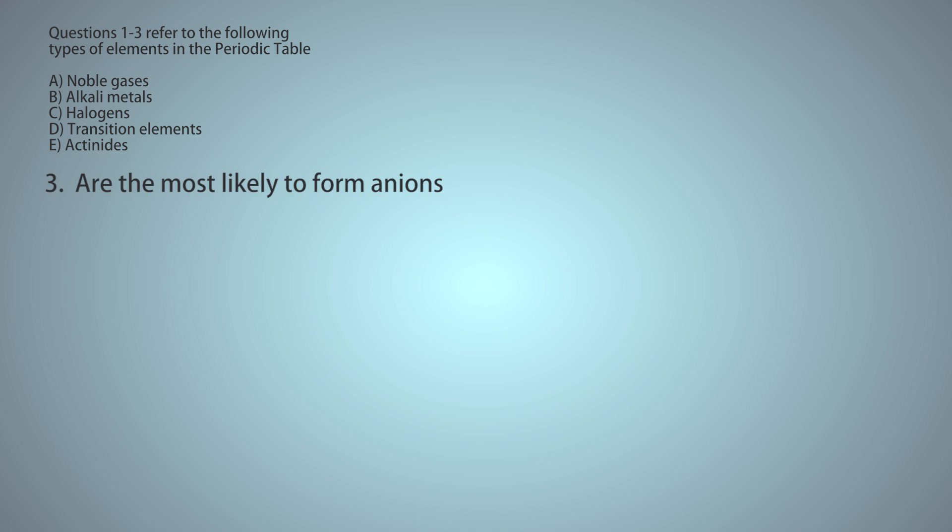Question 3: Which elements are most likely to form anions? You need to know an anion is a negatively charged ion. So the question is asking, which elements are most likely to accept an electron, one or more electrons, and become negatively charged?